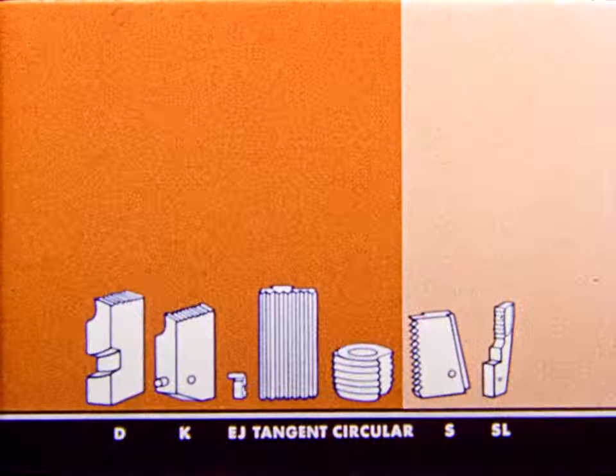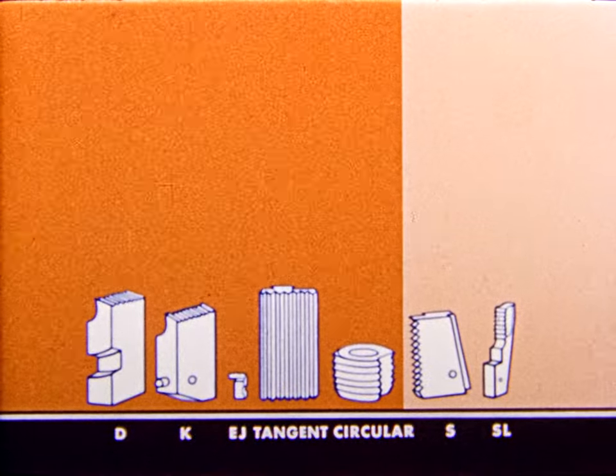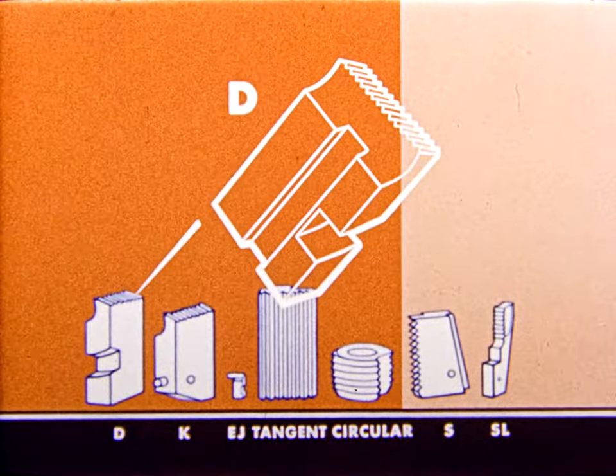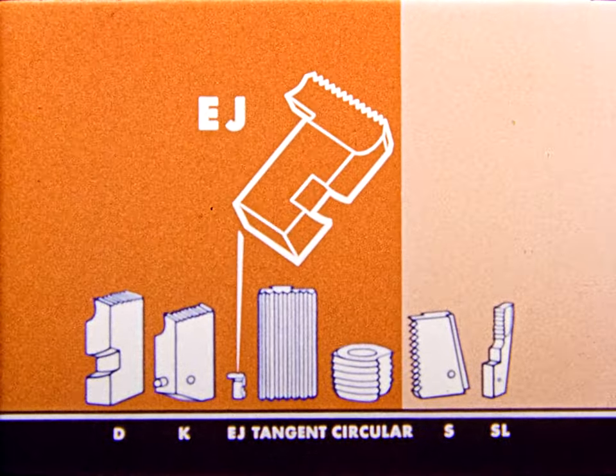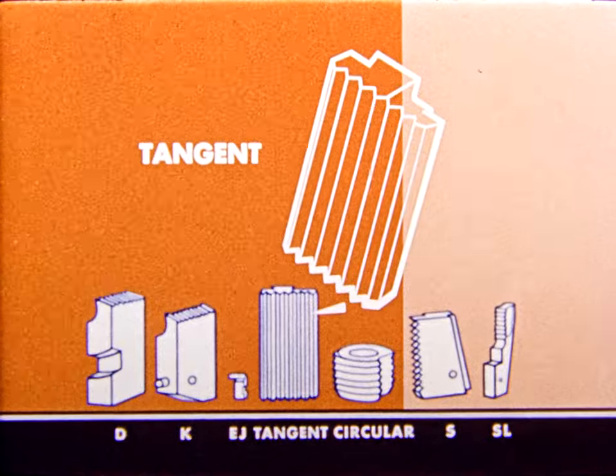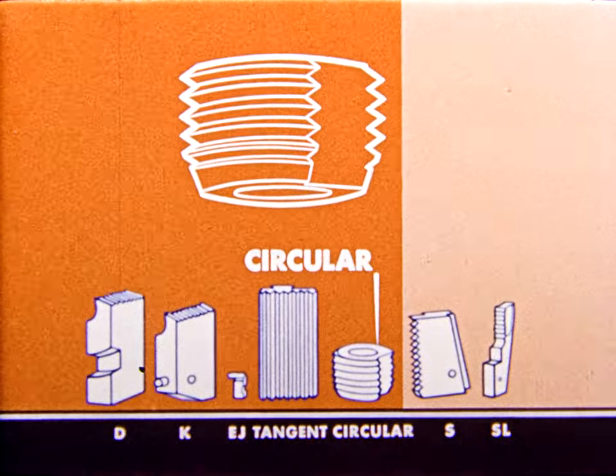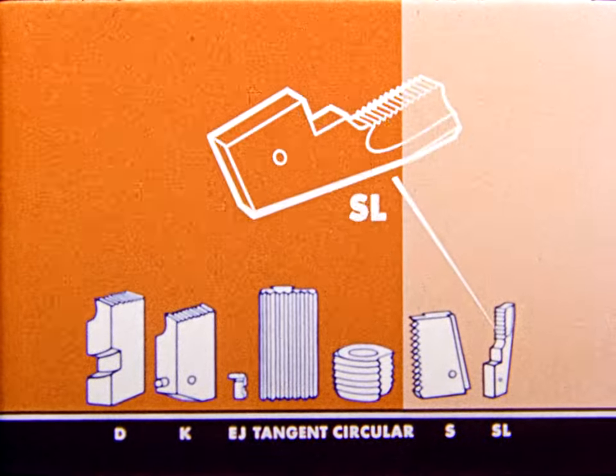There are seven different types of geometric chasers. They are the D, the K, the EJ, the tangent, and the circular for die heads, and the S and SL for taps.